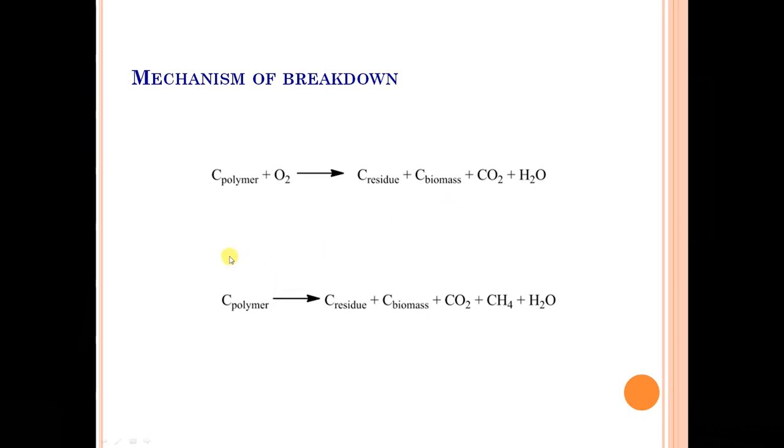Then another way of breakdown mechanism of biodegradable polymer is in the absence of air. There is no air, which is called anaerobic breakdown in the absence of air. Here we get the same products except this CH4. Whereas here CH4 is not formed, here we get hydrocarbon. Same way the polymer is decomposed to give these products. So this is about the mechanism of breakdown of biodegradable polymers.